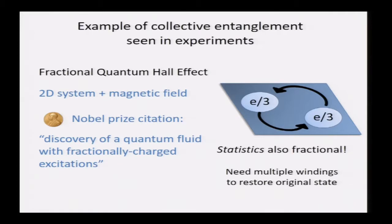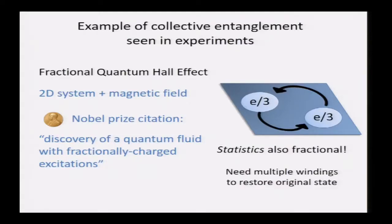And that's not even the craziest thing. Even crazier — too crazy for the Nobel Prize citation evidently — the statistics here are also fractional. We know we have bosons and fermions; fermions are defined by the fact that if you exchange two of them you get a minus sign. Here you need even more exchanges — some extra number of windings of two particles — to get back to the original state. So we know experimentally that entanglement is not just inherently interesting; it can also give some very strange physics.